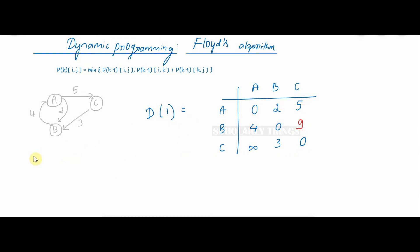d1 looks like this. Now we pass k is equal to 2. Vertex 1, 2 can be made as intermediate nodes. We can find out d2(3,1) as minimum of d1(3,1), d1(3,2) plus d1(2,1). Minimum of d1(3,1) is infinity. d1(3,2) is 3 plus d1(2,1) is 4. Minimum of infinity and 7 is 7. So in d2, 3,1 will be 7. Now d2 looks like this.